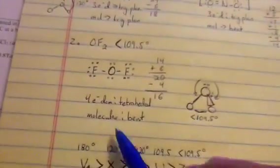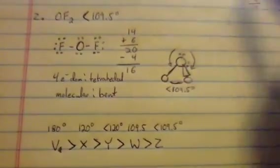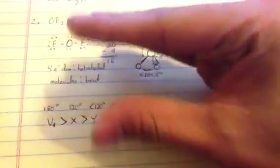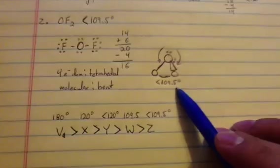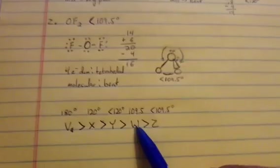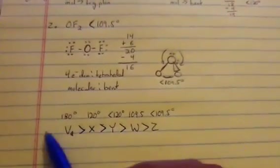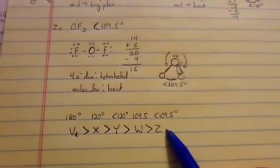Originally, for a tetrahedral, we had this shape, but imagine we were to then cover up these two chlorines. Do you see how that's a bent shape right there? You're going to get that exact same thing. Now all of these lone pairs are going to be clasping this in, and it's going to be less than 109.5. So if we were to take all of these together, V is 180, X is 120, Y is less than 120, W is 109.5, Z is less than 109.5. This will be the order, so the answer should be A for number 31. That was really long.